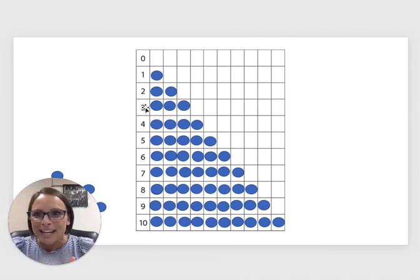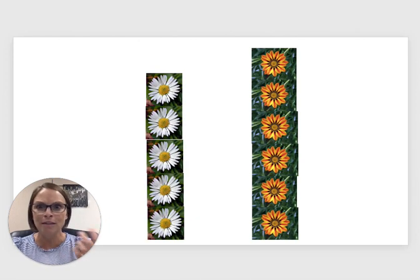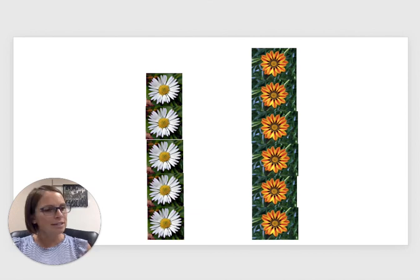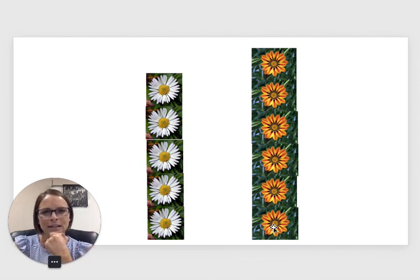So not only can we count, but we can look for patterns. And those patterns can help us count even more. Well, let's take a look at these two different kinds of flowers. So we've got some white flowers and somewhat yellowish orange flowers. And I like how they're organized like this. So it's kind of easier for us to count them quickly.